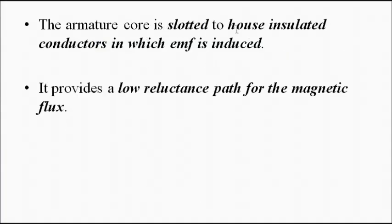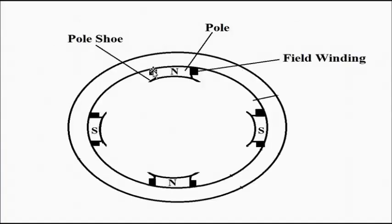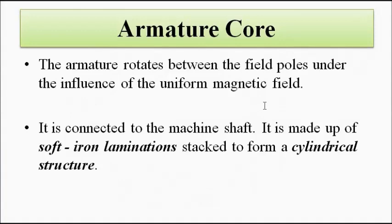This field system produces a constant magnetic field. DC current is passed because we want a constant magnetic field — if we pass AC current it will be a fluctuating magnetic field because the amplitude of AC varies. So these poles with field coils wound around them carry DC current so that they behave as electromagnets, providing a constant uniform magnetic field in which the armature rotates.